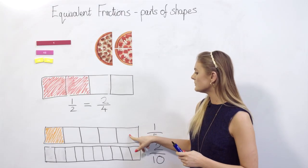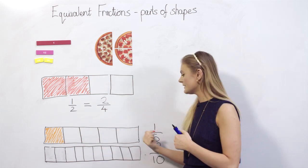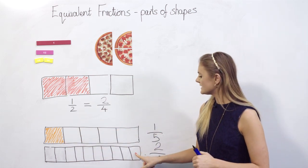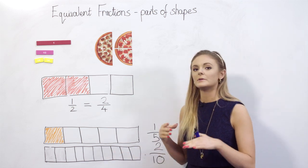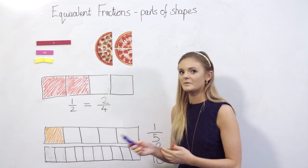So here I've got one bar model divided into five equal parts or fifths, and then I have another one which is divided into ten equal parts or tenths. So we can see that a tenth is smaller than a fifth.